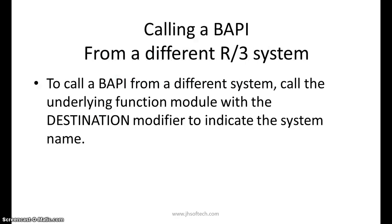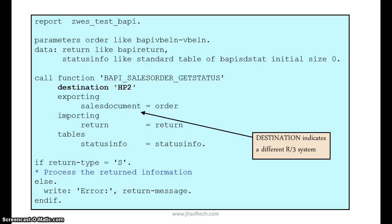Calling a BAPI from a different R3 system: to call a BAPI from a different system, call the underlying function module with the DESTINATION modifier to indicate the system name. The only addition compared to calling within the same system is specifying a destination. For example: CALL FUNCTION <BAPI_name> DESTINATION 'HP2', then EXPORTING sales_document = order, IMPORTING return = return, TABLES status_info = status_info.